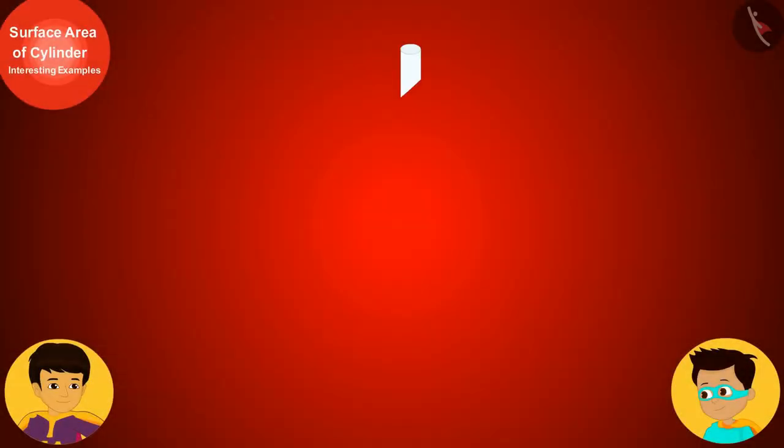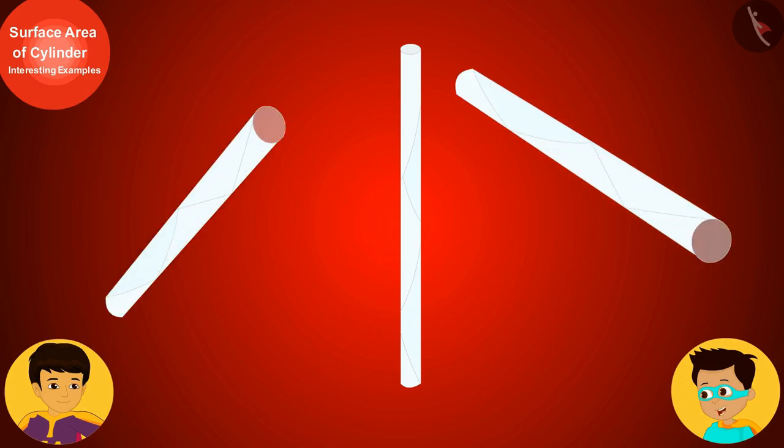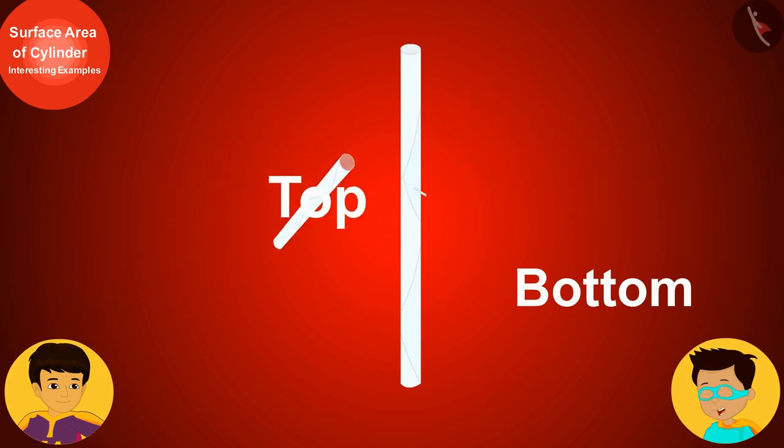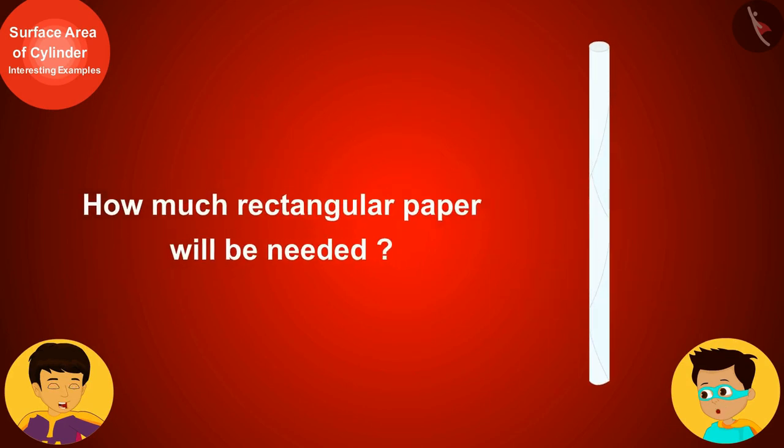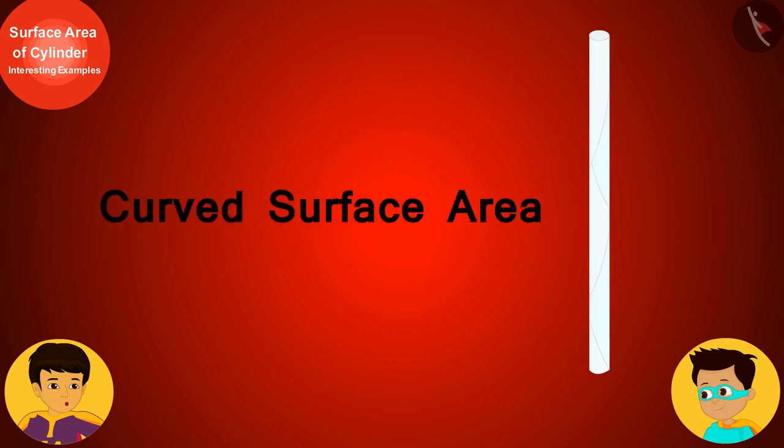Look Manas, I have drawn a straw here. This straw is in the shape of a hollow cylinder, the top and bottom of which are not present. That's right. This means that to find out how much rectangular paper we need to make a straw, we have to find the curved surface area of a straw.